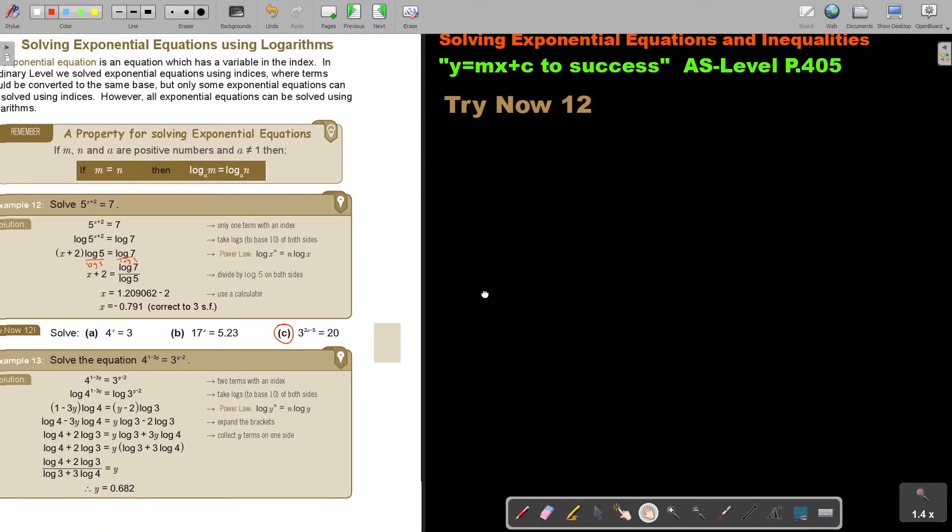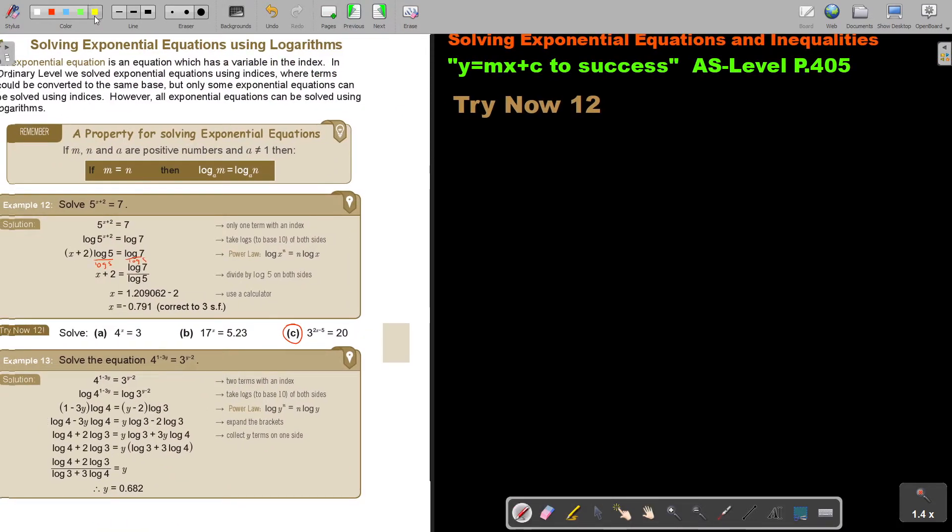Let's look at number C. It's going to be 3 to the power of 2x minus 5, and it equals 20. Now it's one term equals one term, so take a log on both sides.